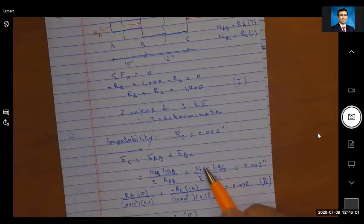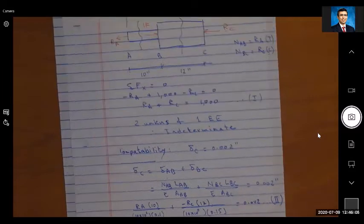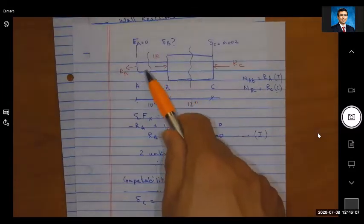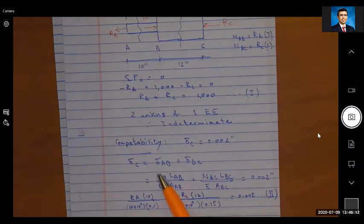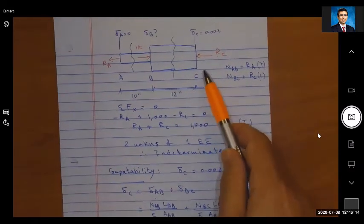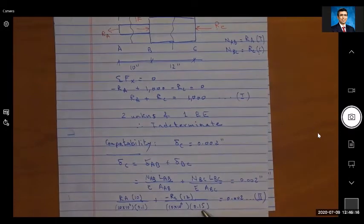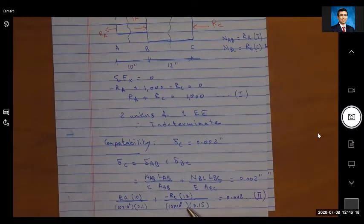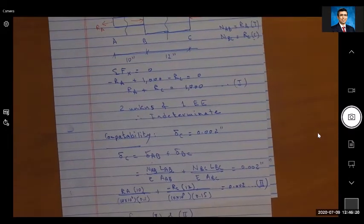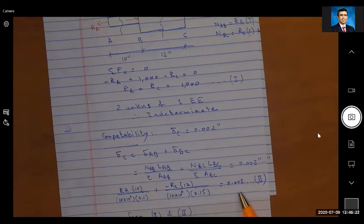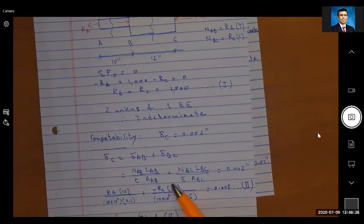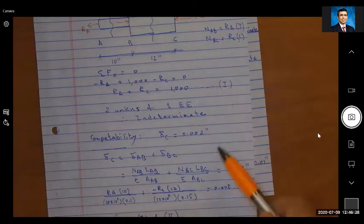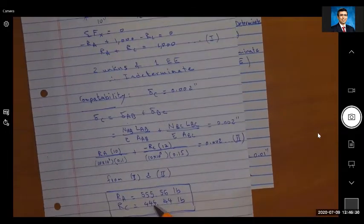Where delta AB is N_AB times L_AB divided by E times A_AB, and likewise for BC. These two combined must be equal to 0.02. But from the free body diagram we know that N_AB is equal to Ra, so I can substitute here for Ra. And N_BC is equal to minus Rc because it's compression, so these two combined must add to 0.002.